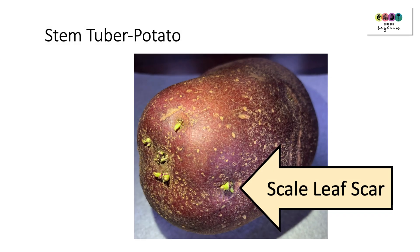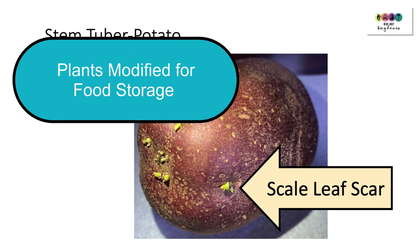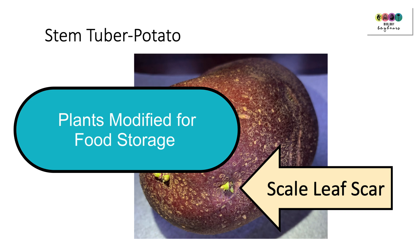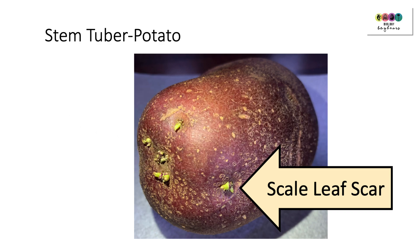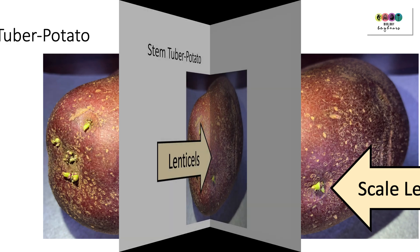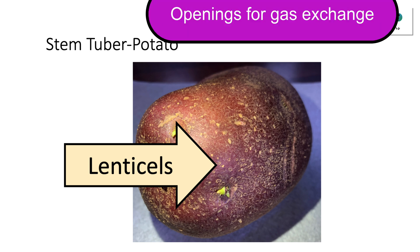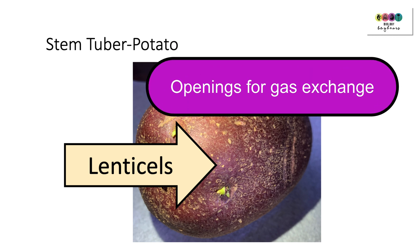The potato is an important diagram because you've met it before in plants modified for food storage, so remember to know where the scale leaf scar is, as well as those axillary buds. Be also able to recognise lenticels — those apertures or openings for gas exchange, the little dots on the potato surface.